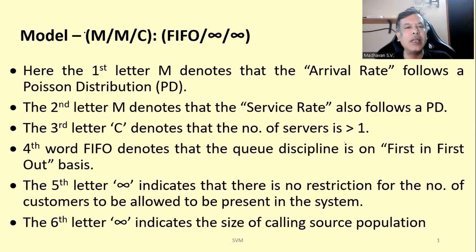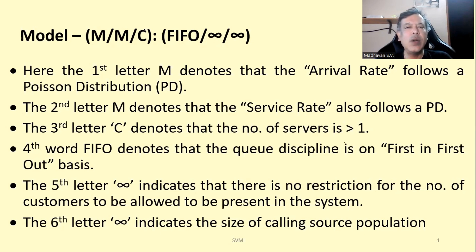In this model, the first letter M and second letter M both denote that the arrival rate follows a Poisson distribution. The second letter also denotes that the service rate follows a Poisson distribution. The third letter C denotes that the number of service channels is more than one. If it were one, we would have mentioned it as one like in the previous model, but since it is more than one, we denote it by C.